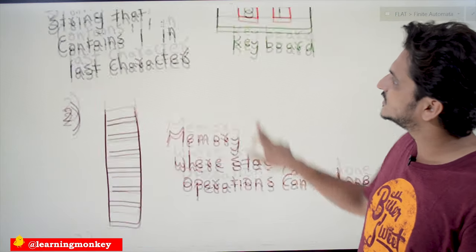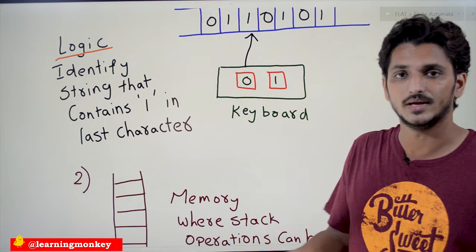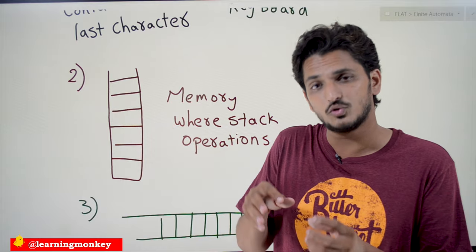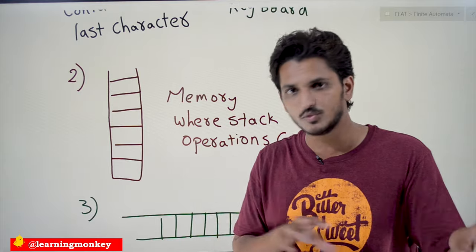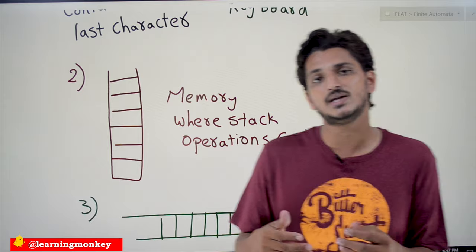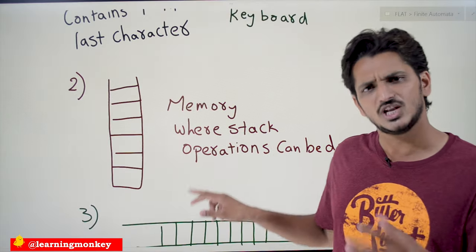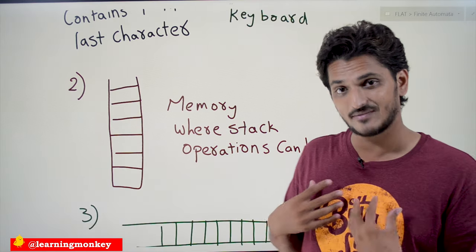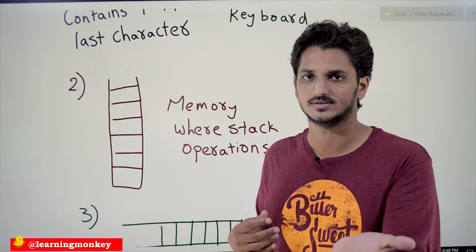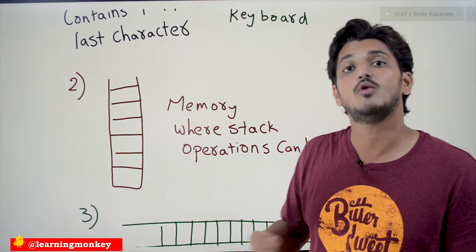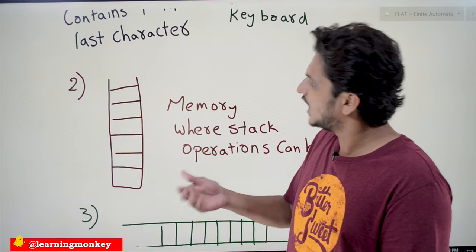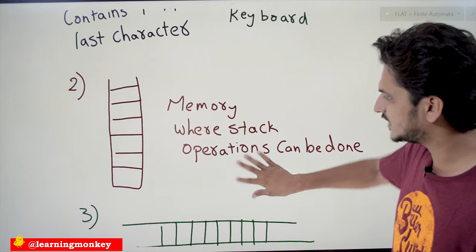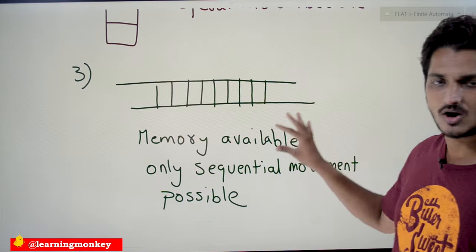Coming to the second part: as memory evolved, how do computations evolve? In this part we have a memory device, but we don't have the capability to move from one position to another randomly. On this memory device we have the capability to do only two operations — the stack operations: push and pop. How do we define our machines to write logics using only push and pop? That is the second part.